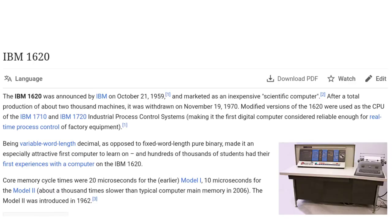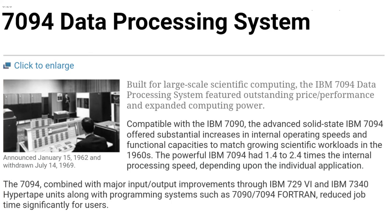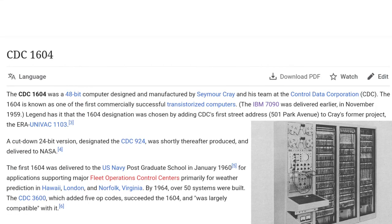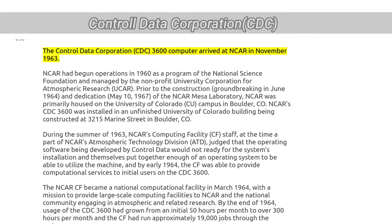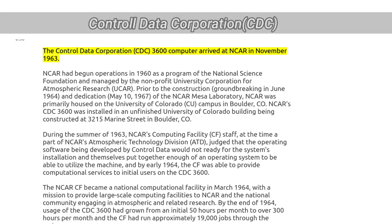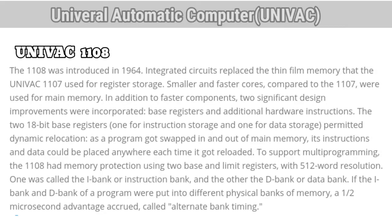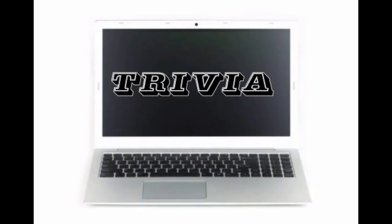Examples of the second generation of computers include: IBM 1620, IBM 1724, CDC 1604, CDC 3600, and UNIVAC 1108.